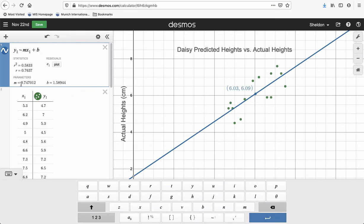So it creates an equation. There you go, the equation of the linear regression line is Y equals negative 0.747X plus 1.59, right?